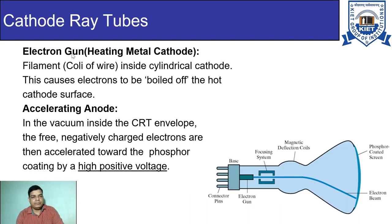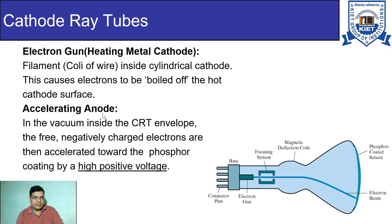We have one electron gun, and this electron gun is made up of a cathode. We know that the cathode is negatively charged. When this cathode is heated up by passing current through the connector pins via the filament, it causes the electrons to be boiled off — that means it starts emitting electrons. However, these electrons have very low speed, so to increase the speed of the electrons in the beam, we have another system called the accelerating anode.